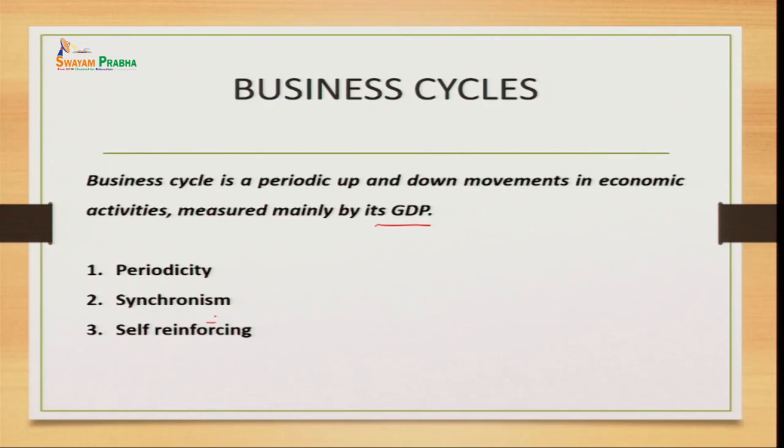If we consider the opposite, where demand for electronic goods decreases, production reduces, less demand from suppliers, some firms leave the industry, people lose jobs, income reduces, and demand reduces further — all these things have a synchronization effect passing from one sector to another. This effect passes on after a period of time, and all sectors are not affected simultaneously, but the impact passes on gradually.